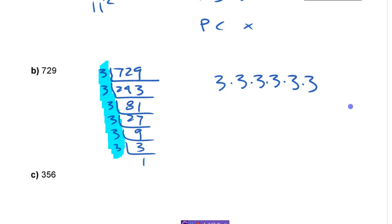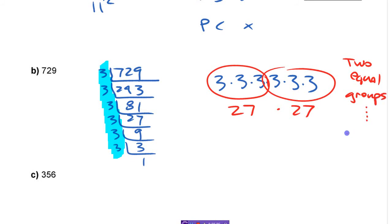If I write all these out, six threes there. If I want to decide if it's a perfect square, I can make it into two equal groups. Can you make that into two equal groups? Of course you can. Two equal groups, I could group it like this. Three threes and three threes. Or in other words, 27 times 27. You can make two equal groups, so it's a perfect square. Once you group it as two equal groups, it is a perfect square.